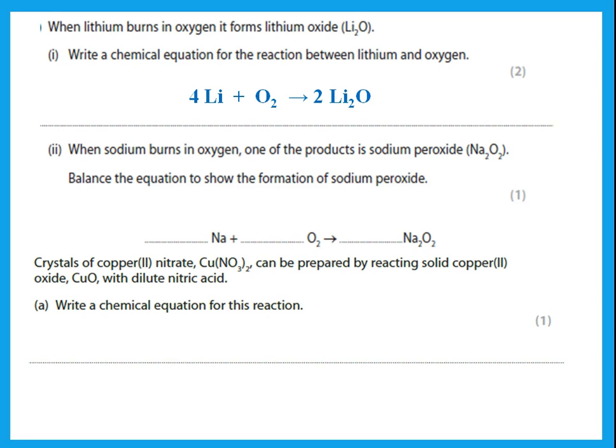Balance the equation to show the formation of sodium peroxide. Before the arrow: 1 sodium; after the arrow: 2 sodium — put 2 in front of sodium. Oxygens before the arrow: 2; oxygens after the arrow: 2 — already balanced. The space provided does not mean you have to write a coefficient of 1; in fact you should not, since 1 is understood. So the equation is already balanced as given.